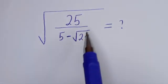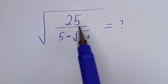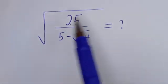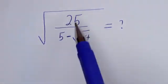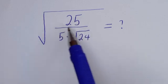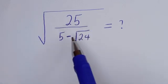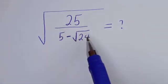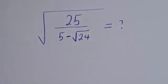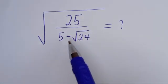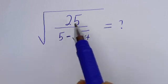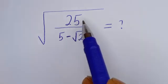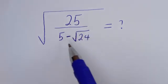Hello! How to simplify this nice math problem without using a calculator. We have square root of 25 divided by 5 minus square root of 24. In this case, we are going to multiply both the numerator and denominator by the conjugate of this denominator.